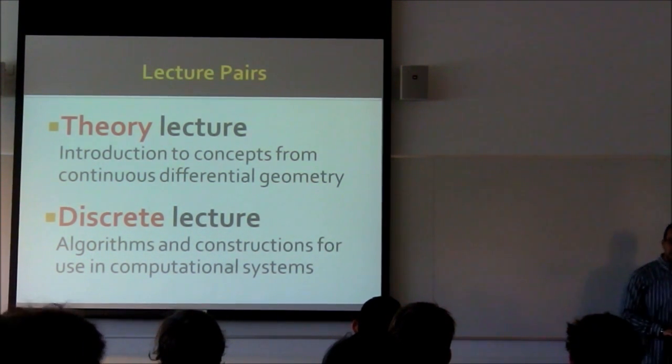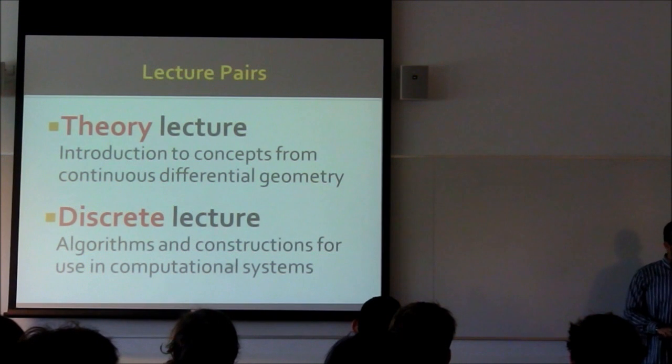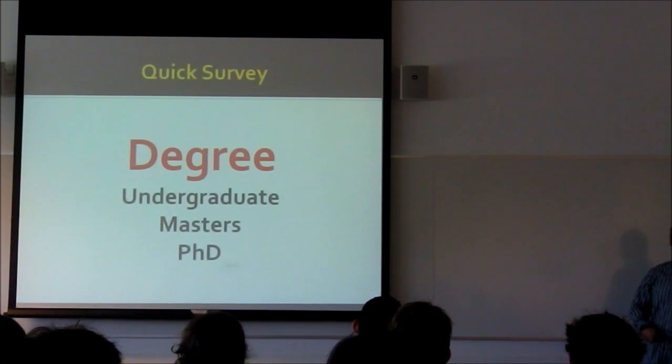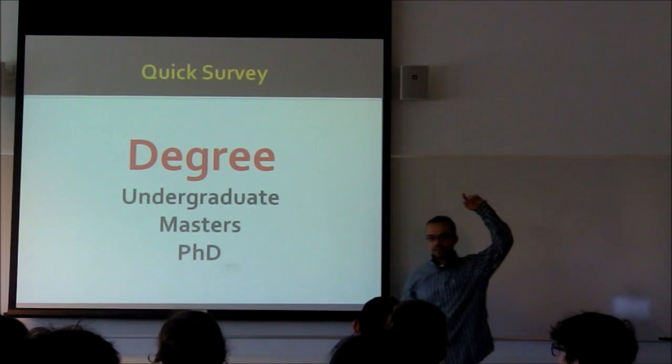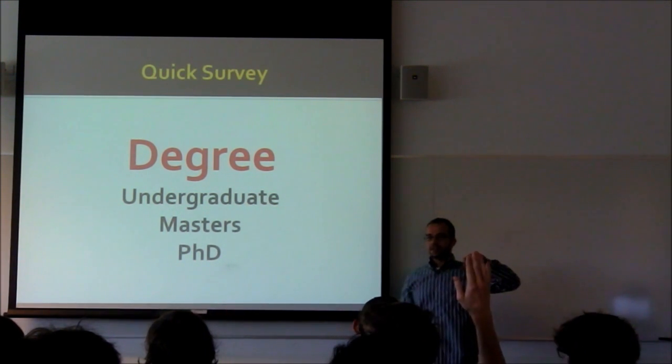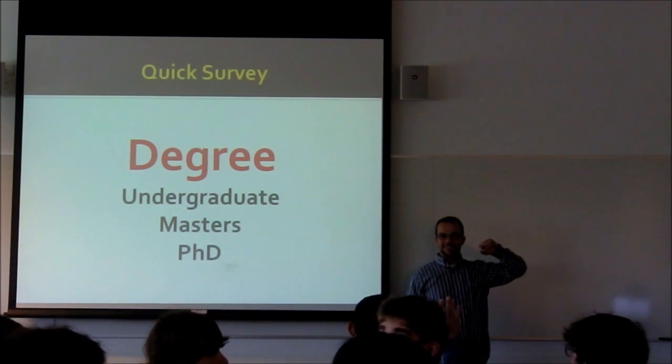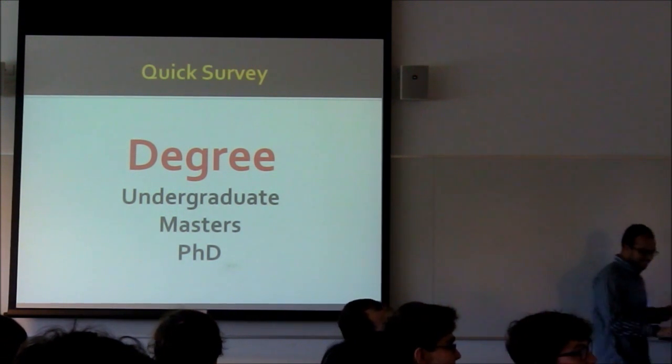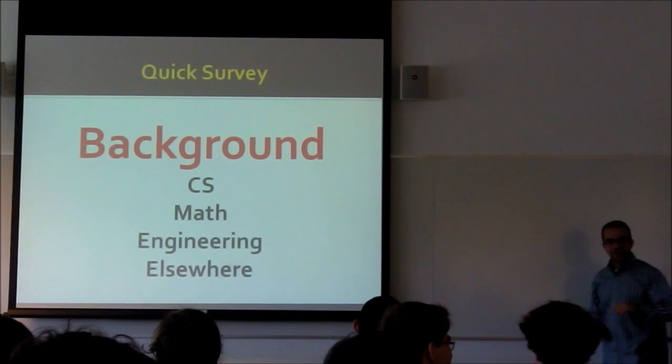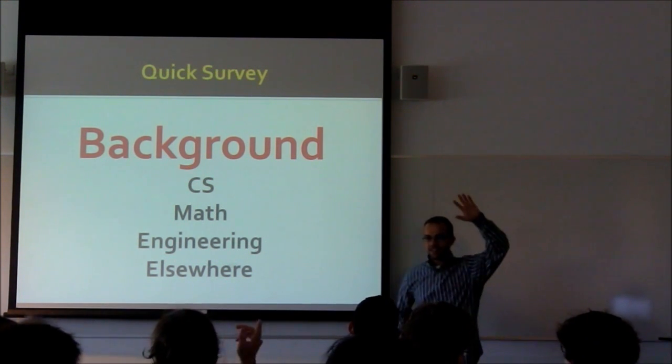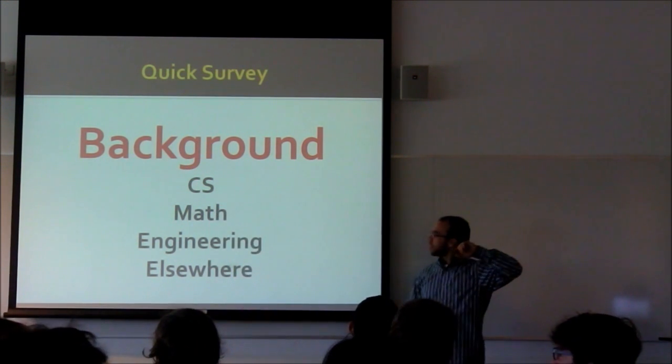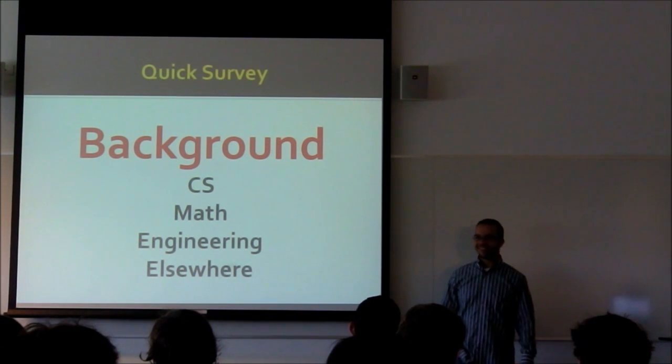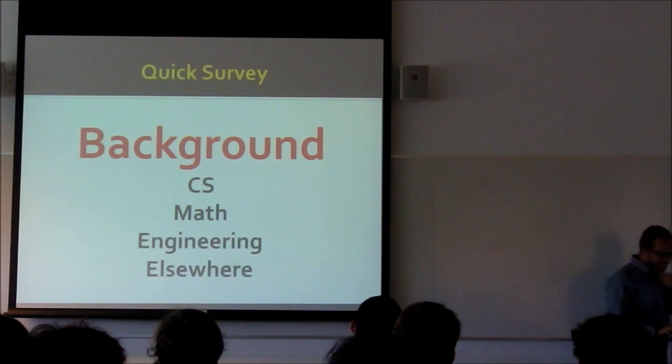So I thought before we went too much further, just for our own sake, it would be useful to do a quick show of hands survey. Don't be shy. Again, the background that we expect is what it is. But how many students in here are undergrads? Cool. Master students? And PhD? And I guess beyond? Cool. So it's pretty evenly split. And in terms of what department you guys are in, computer science, math, engineering more generally, elsewhere, art? No? Every once in a while we'll get an art student.